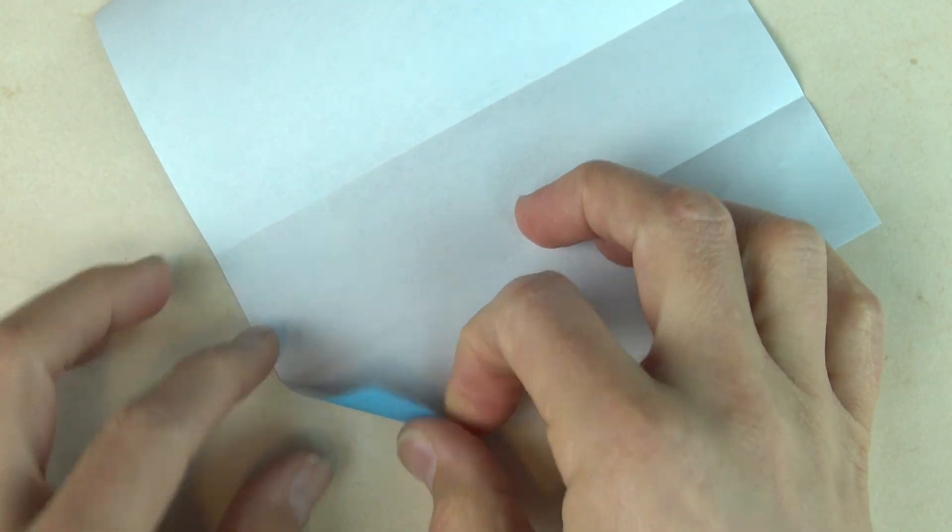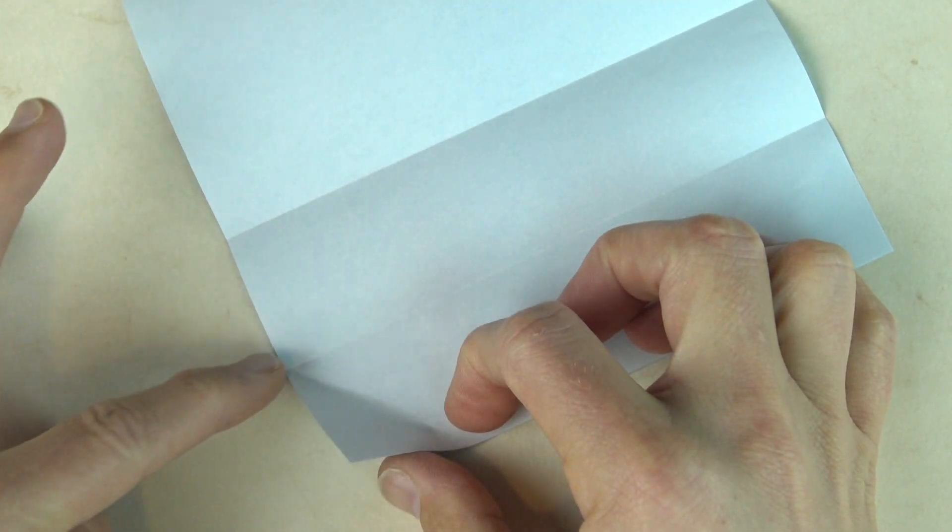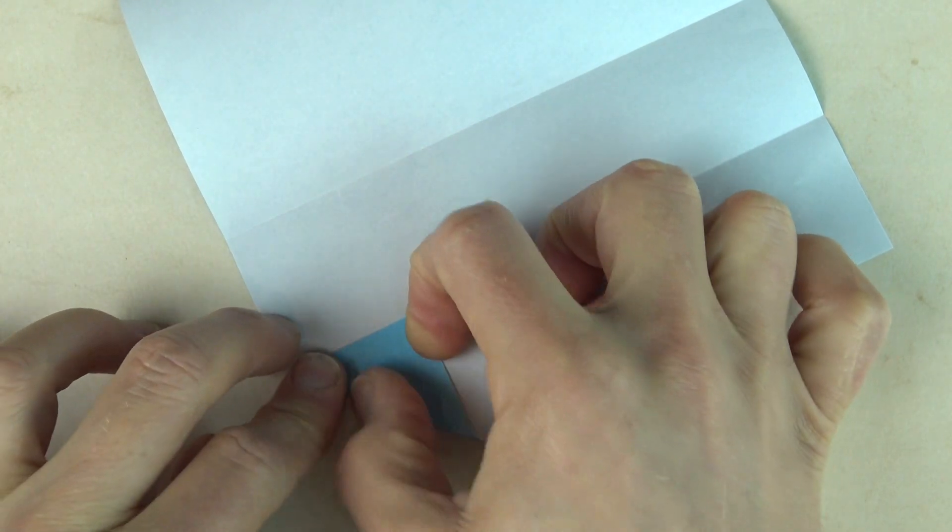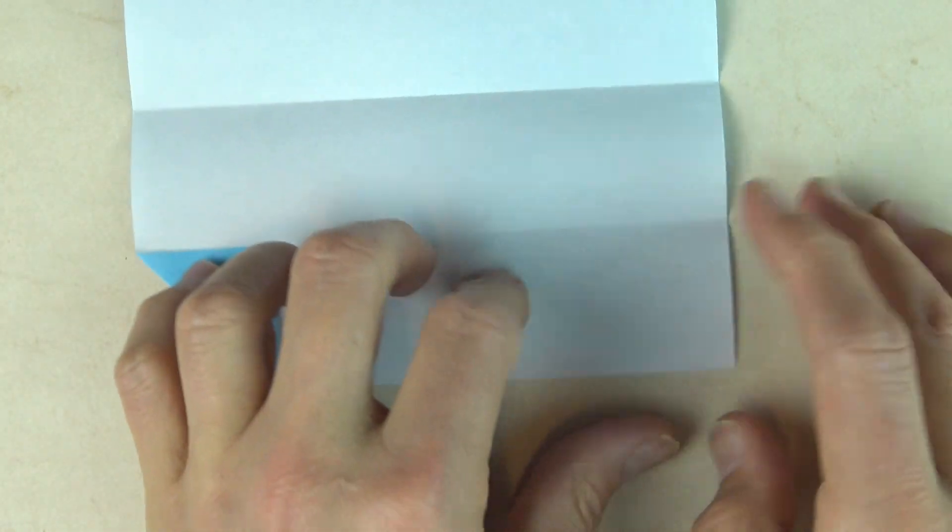And unfold. Now fold this corner up so that this edge aligns with the crease. And repeat.